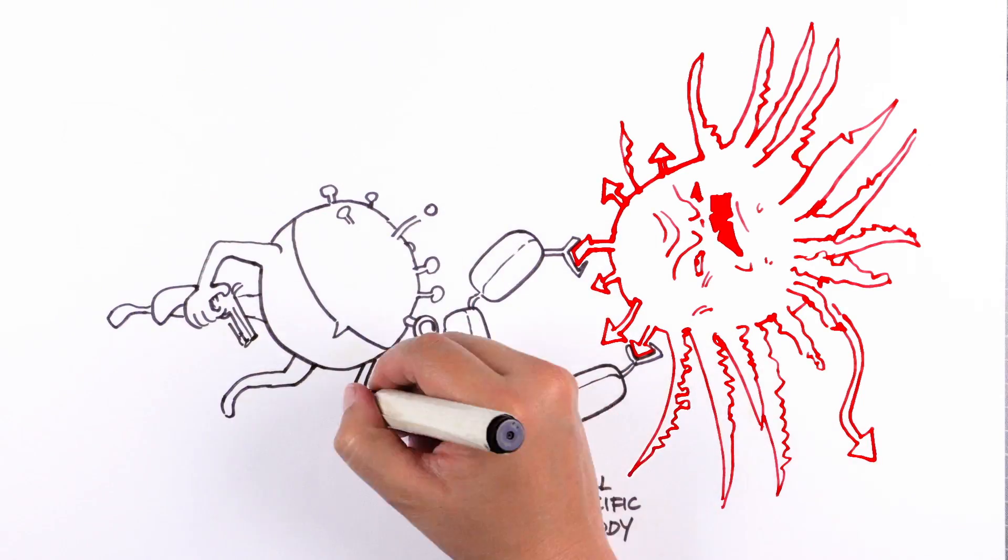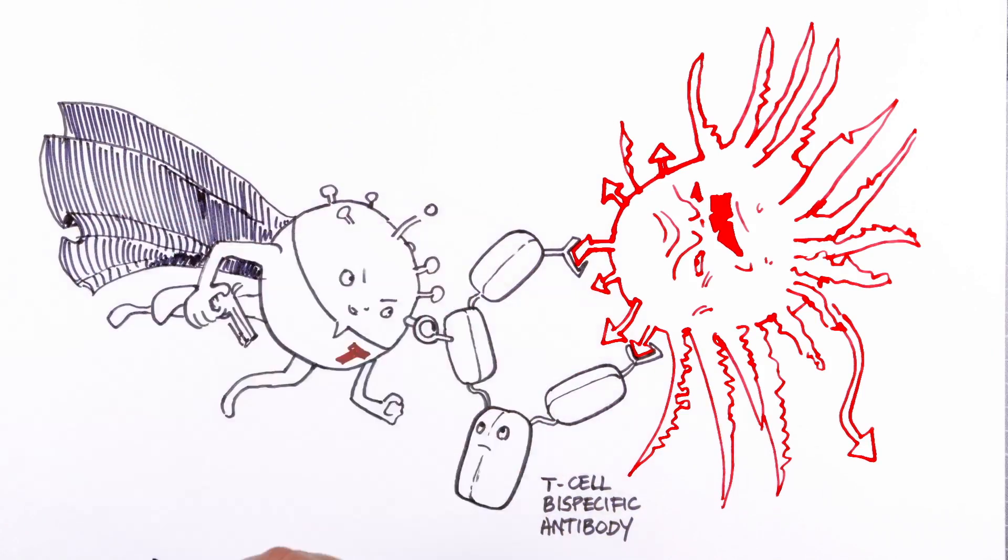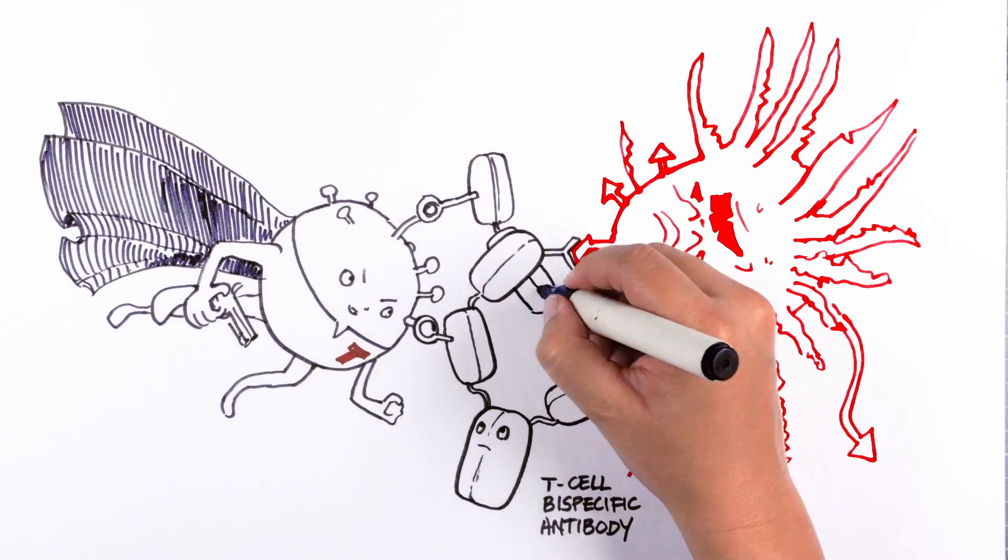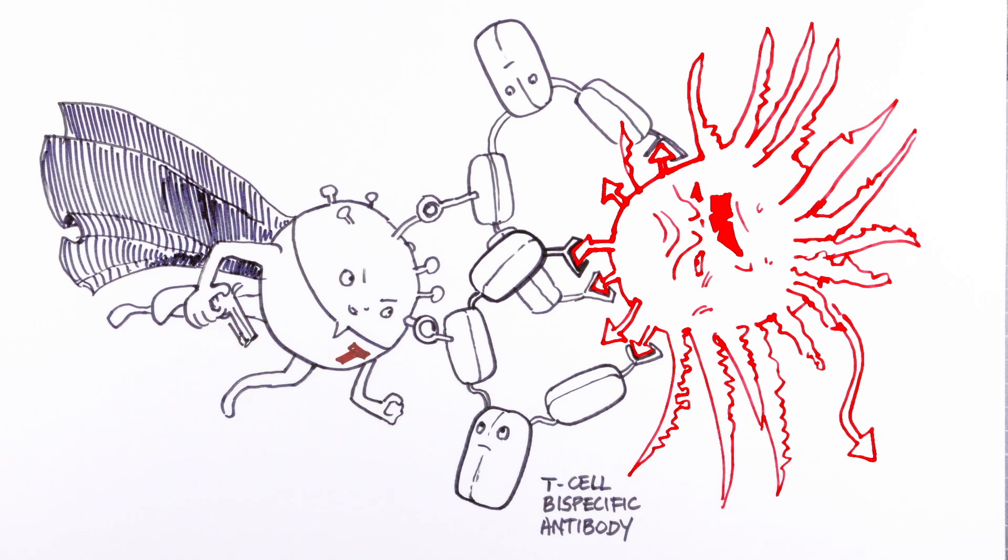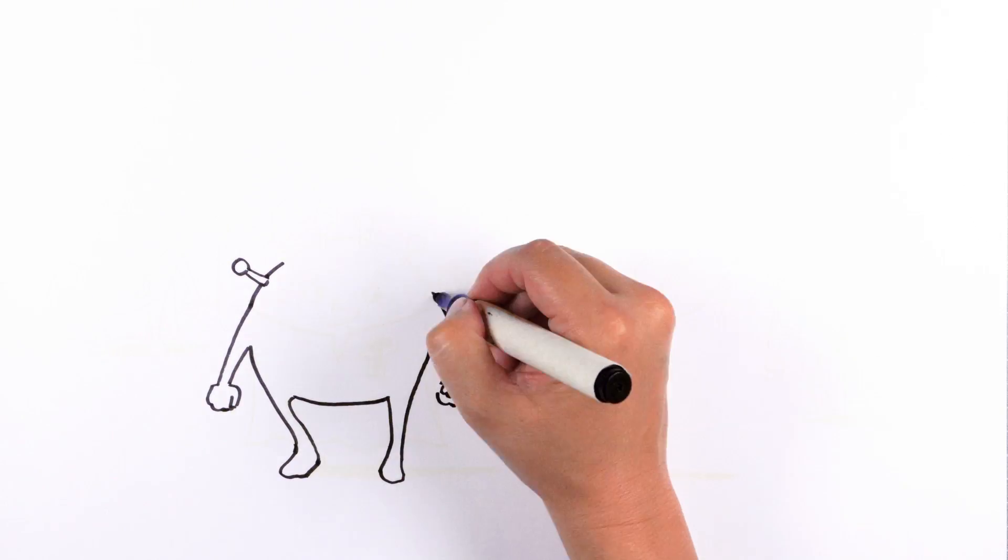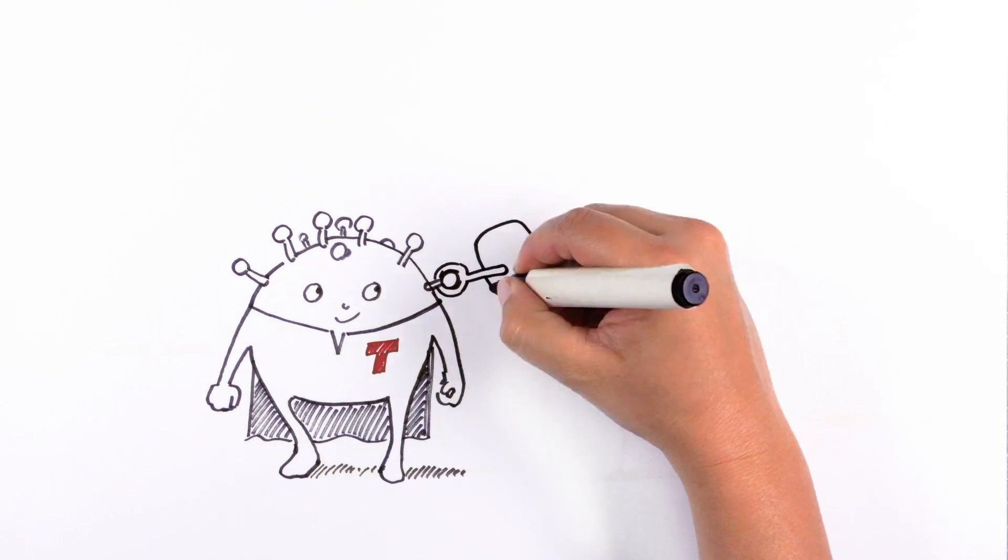The T-cells are then activated to attack the cancer cells. The ambassador role of MHC is not needed anymore, while the need to recognize tumor markers keeps the intervention specific to cancer cells. T-cell bispecific antibodies are designed to be very similar to natural antibodies and to have a lasting action.